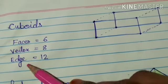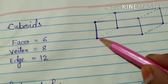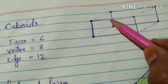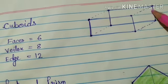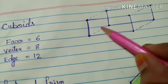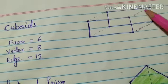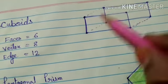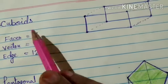Now you see the edges. So if you will see: 1, 2, 3, 4. Then for the other rectangle: 5, 6, 7, 8. Then it is 9, it is 10, it is 11 and it is 12. So there are 12 edges in a cuboid.